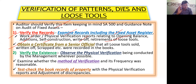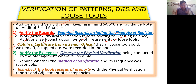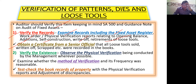While verification of loose tools, patterns, dies and loose tools — first one is to verify the records. The auditor will examine records including the fixed asset register, and obtain a certificate from senior officials confirming that proper recording of loose tools — sold, written off, or scrapped — has been done in the books. Entry should be in books.